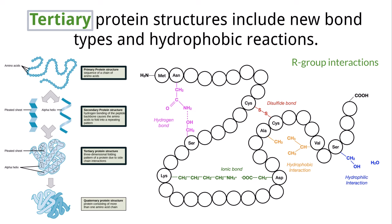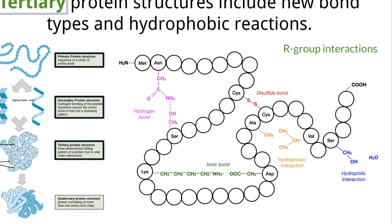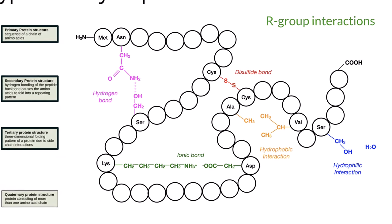This has many more folds and interactions than just the alpha helices and beta pleated sheets from the secondary structure. With the tertiary structure, there are specific examples of interactions and bonds that you need to know about for the IB exam. Let's go through each one.